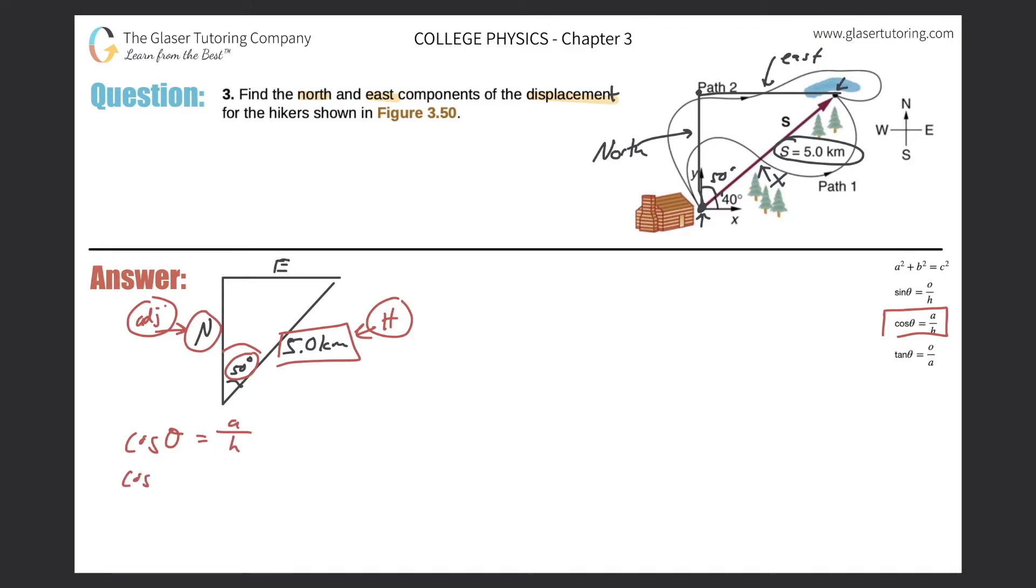So let's write that down: cosine of theta equals the adjacent side over the hypotenuse. So cosine of our angle, which is 50, equals the adjacent side, which is the northern component, divided by the hypotenuse, which we know to be 5.0. Take out your calculator, make sure it's in degree mode, and calculate cosine of 50. The cosine of 50 is 0.64, so that equals N over 5.0. Cross multiply, so the northern component here is going to be 0.64 times 5, which gives us 3.2 kilometers.